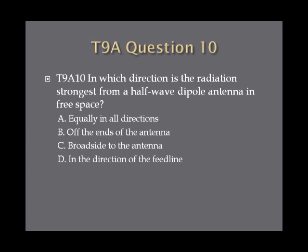Question 10: In which direction is the radiation strongest from a half-wave dipole antenna in free space? A. Equally in all directions. B. Off the ends of the antenna. C. Broadside to the antenna. Or D. In the direction of the feed line.